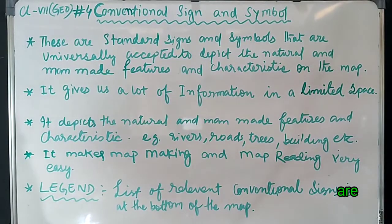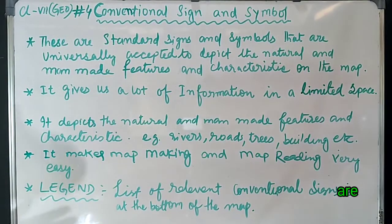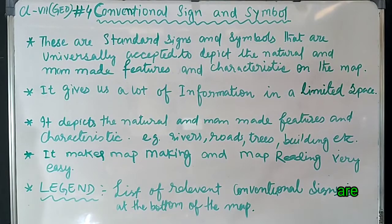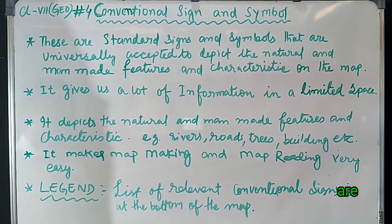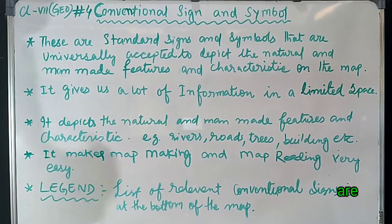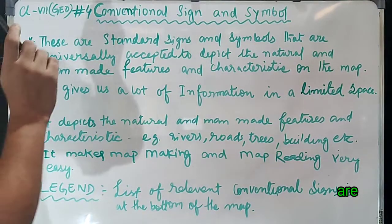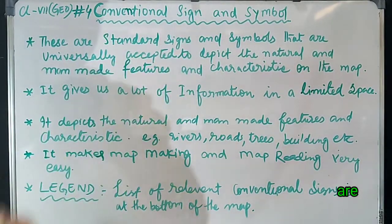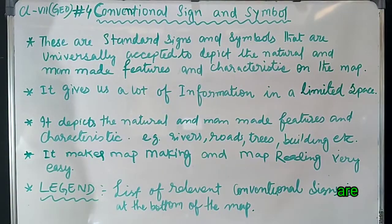Hello, good morning students. Today we are starting video number four of the first chapter, and this is the last part of this chapter. In our previous video we were discussing the components of the map and we already discussed four components. In this video we are discussing the last one — component number five — that is conventional signs and symbols.